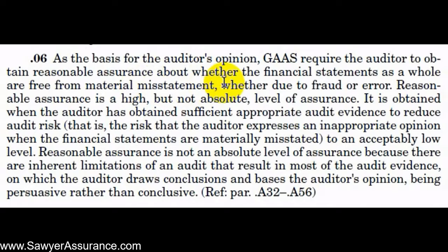Control risk means that an account, assertion, or disclosure is misstated and the company's controls are not designed or operated in a way that might detect and correct that misstatement. Inherent and control risk together make up the risk of material misstatement. That description applies at the assertion level. There is also risk of material misstatement at the financial statement level — risks related to misstatements that could be pervasive across all accounts, such as fraud affecting many accounts. AUC section 315 goes into more detail on how to assess the risk of material misstatement.